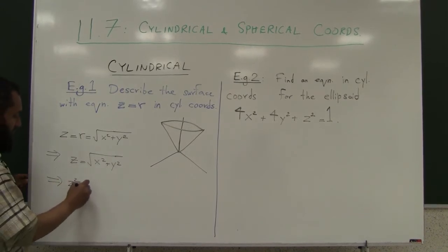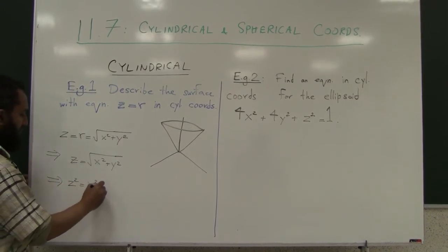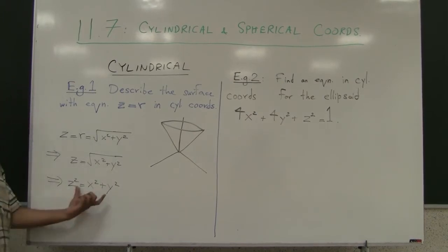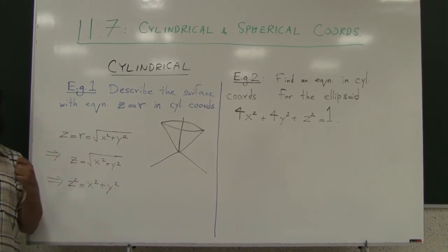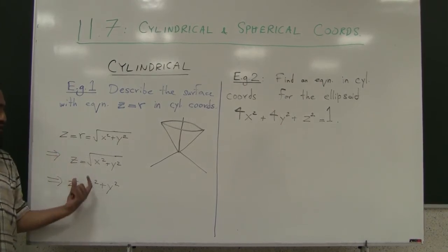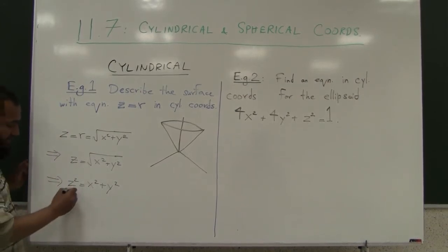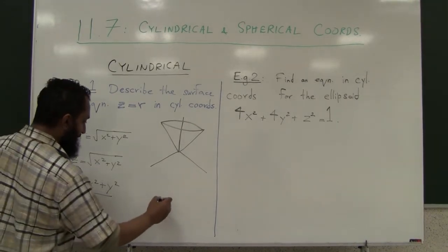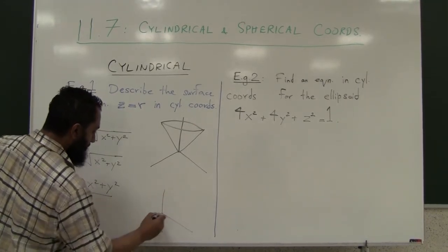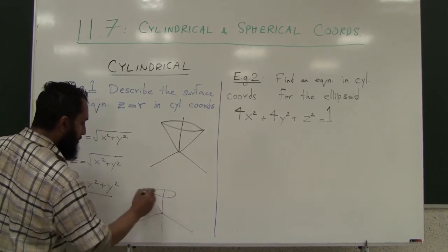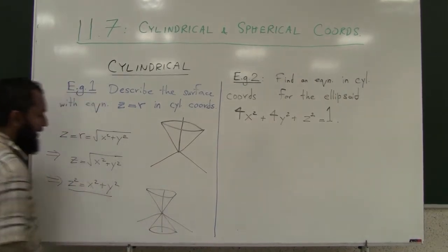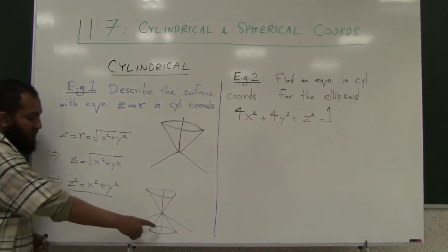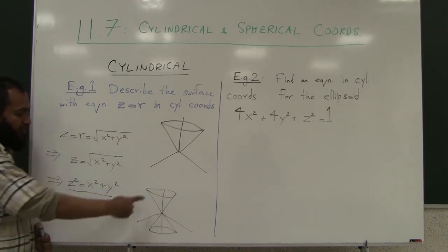This is the equation of a circular cone. Let me go a step further. If z equals this, then z squared equals x squared plus y squared. This further confirms - if you look up this equation in section 11.6 when we did quadratic surfaces, this is the form of the equation of the cone whose axis is the z-axis.